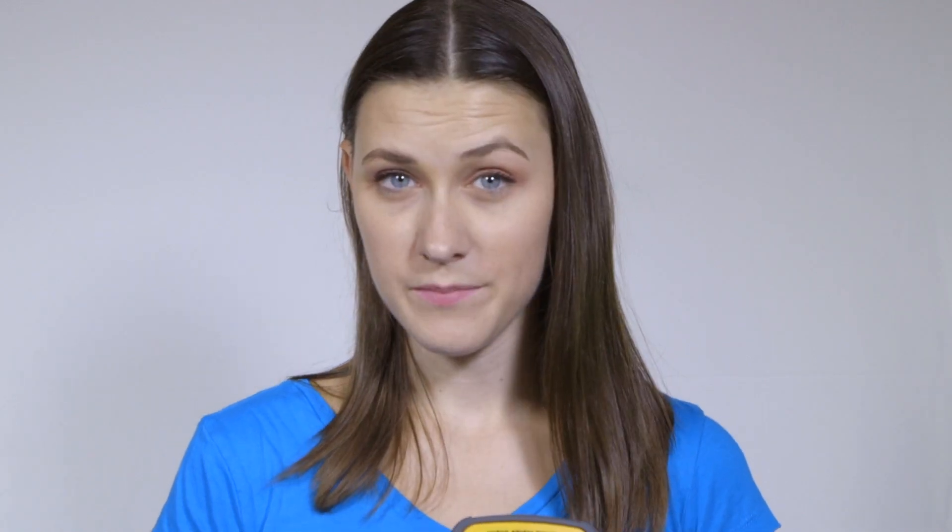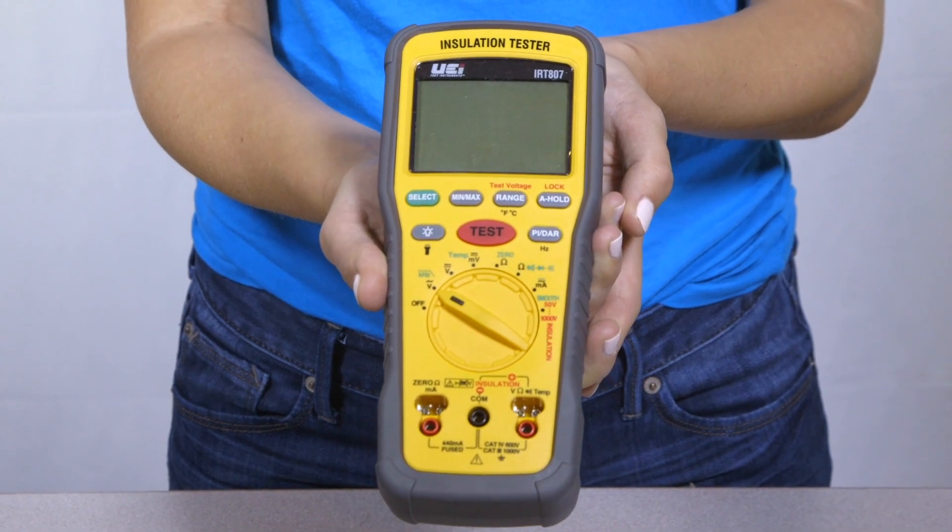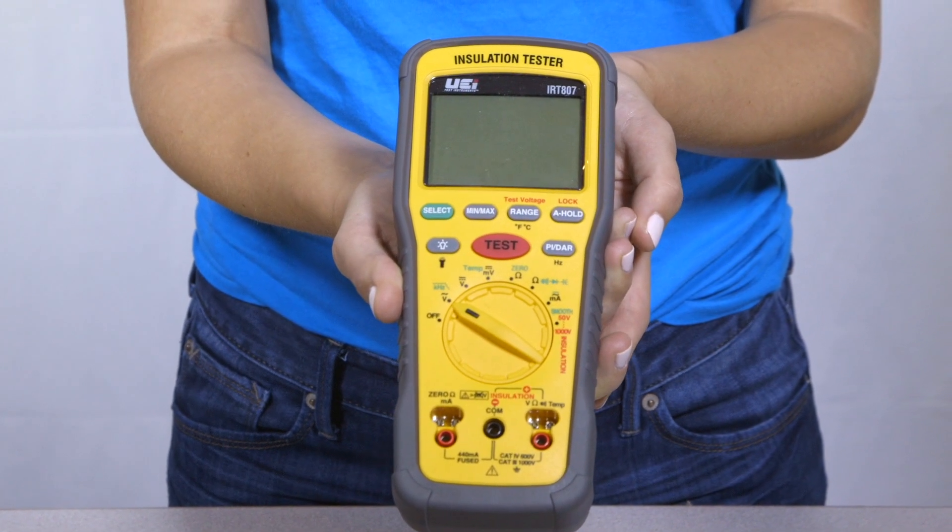The IRT-807 features an insulation resistance of 2 giga-ohms, earth bond resistance of 20 kilo-ohms, 1,000 volts AC-DC, and resistance of 40 milliohms.